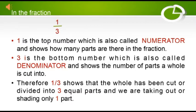When you see the fraction one by three, you will see that three is the number at the bottom, which is also called the denominator. The numerator shows how many parts are there in the fraction. Therefore, one by three shows that the whole has been cut or divided into three equal parts and we are taking out only one part.